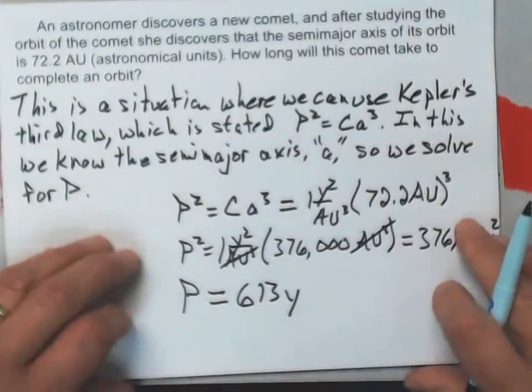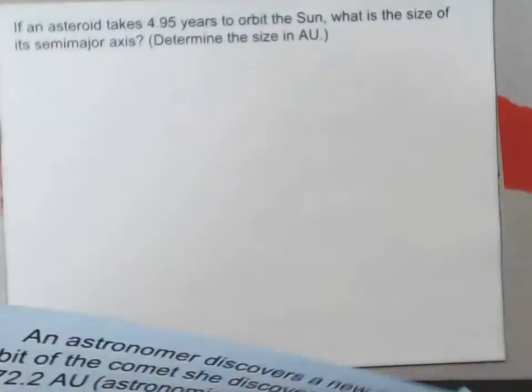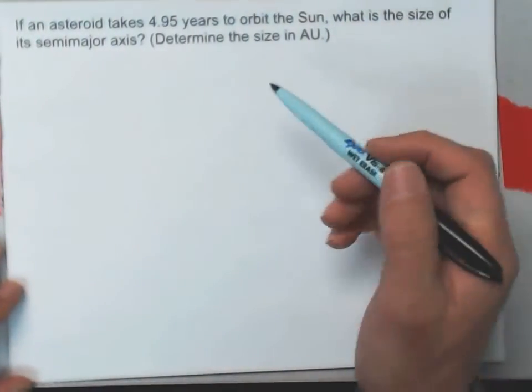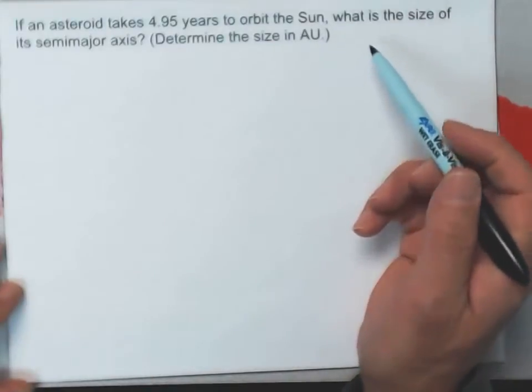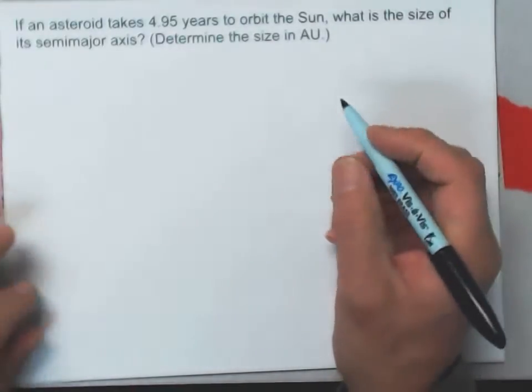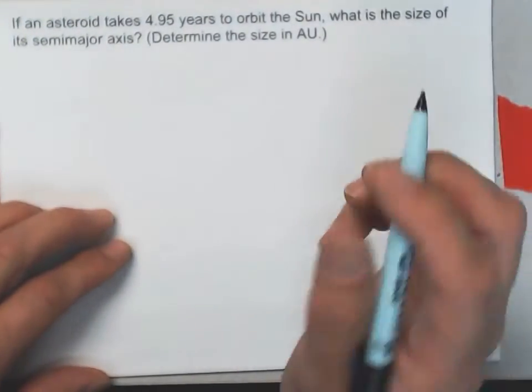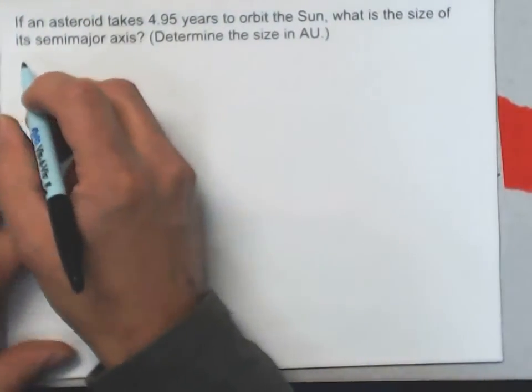Let's do another one. Here we have, if an asteroid takes 4.95 years to orbit the Sun, what is the size of its semi-major axis? Well, if I was writing this out like a homework solution, I would say...